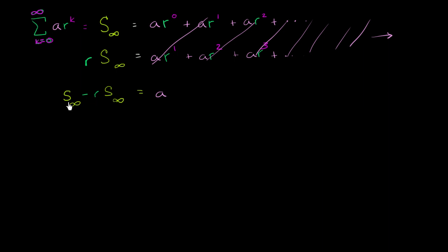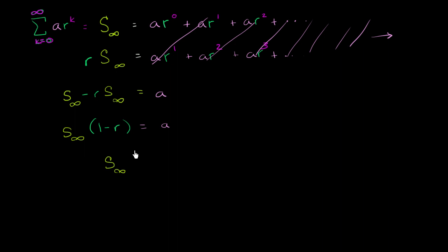We can now solve for our sum. If you factor out S sub infinity, you're left with S sub infinity times (1 minus r) equals a. Divide both sides by (1 minus r), and we get that our sum equals a over (1 minus r). This is an amazing result — we're taking the sum of an infinite number of terms, and under the proper constraints, we get a finite value.